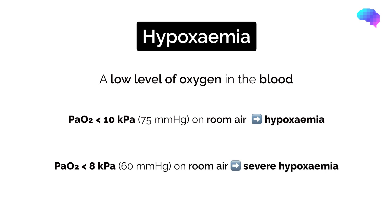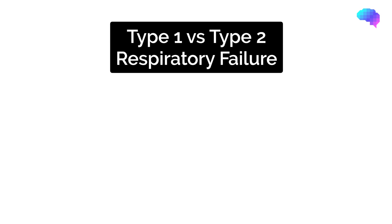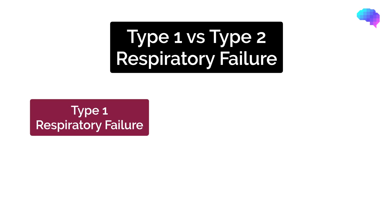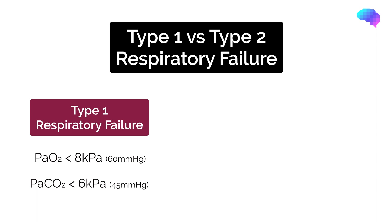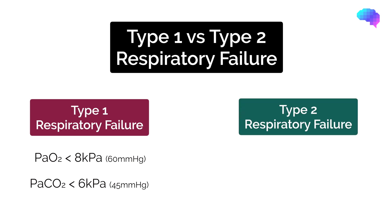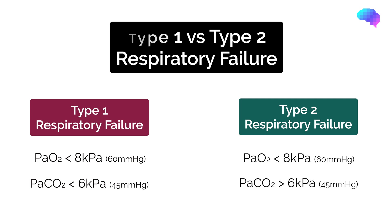If the PaO2 is less than 8 kilopascals on air, a patient is considered severely hypoxemic and in respiratory failure. Type 1 respiratory failure involves hypoxemia — low oxygen — with normacapnea, a normal carbon dioxide. Type 2 respiratory failure involves hypoxemia with hypercapnea, a high carbon dioxide.